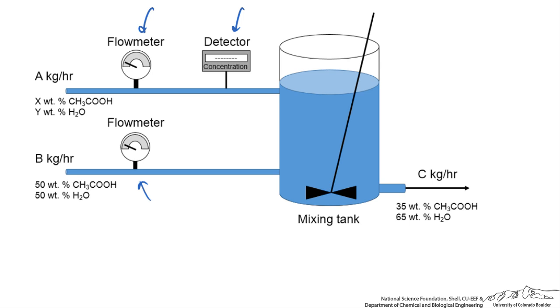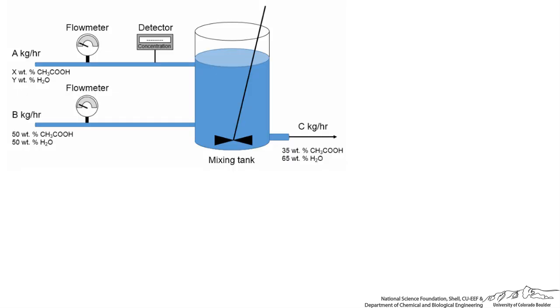To get a relationship for the mass flow rate of B in terms of the composition and flow rate of A. From a material balance perspective, we have MA, this is the overall balance, plus MB equals MC.